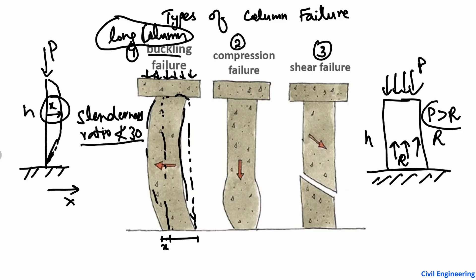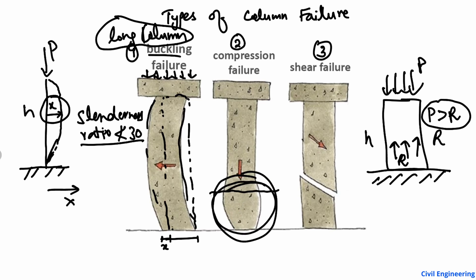When the load P is greater than the resistance R, there will be a compression failure of the column. You can see that the column completely fails — sometimes splitting into two parts. This kind of failure, where the column buckles in both directions or breaks into two parts, is known as compression failure, where the resistance capacity is lower than the applied load.